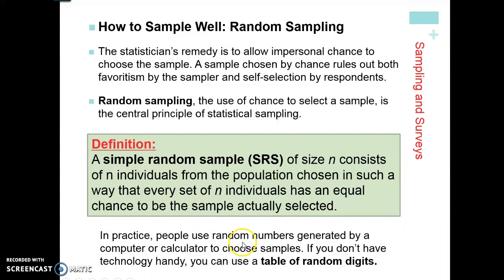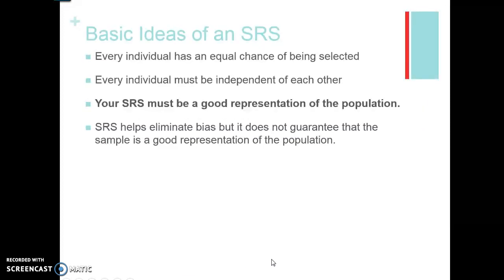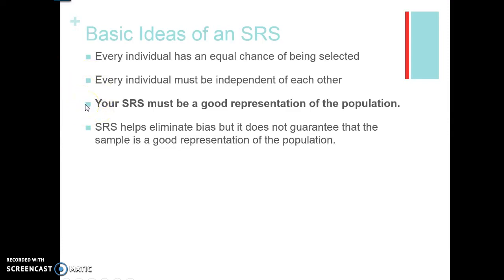In practice, people use random number generators on a calculator or computer to choose samples. If you don't have technology, you can use a table of random digits. The basic idea of a simple random sample is that every individual has an equal chance of being selected. A simple random sample is not separating into boys and girls and choosing three of each — everyone must be in one large group, independent of each other, to be a good representation of the population.